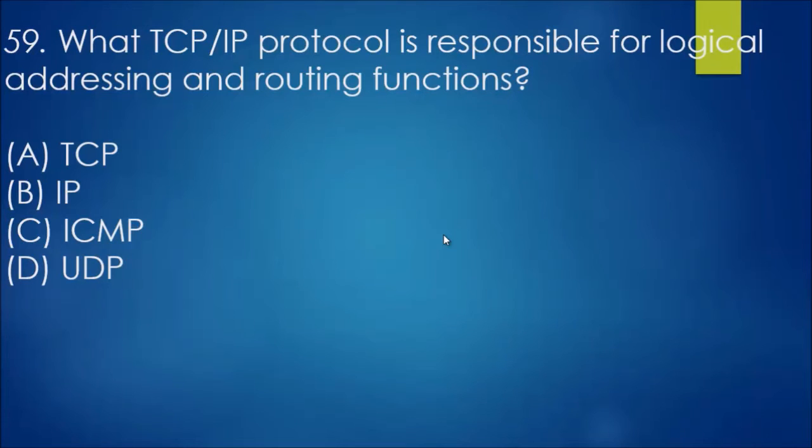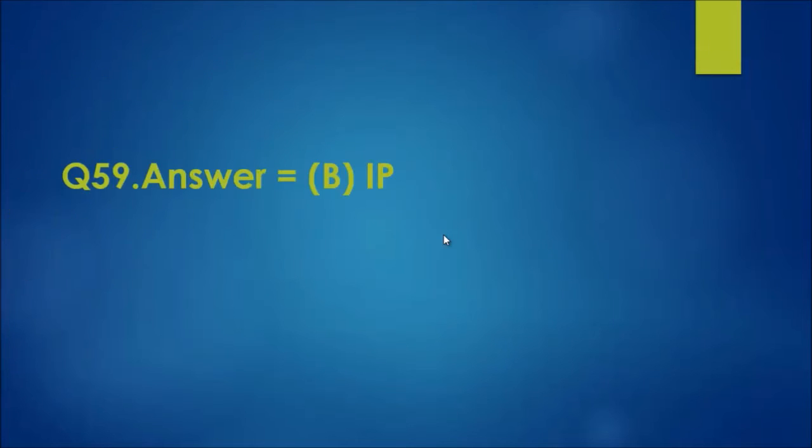Question 59: What TCP IP protocol is responsible for logical addressing and routing functions? Logical addressing and routing functions are layer three. IP is on layer three. TCP is just another protocol to facilitate the passage of communication. UDP is an unreliable connection, the sister of TCP. ICMP isn't related to that, so it's IP.